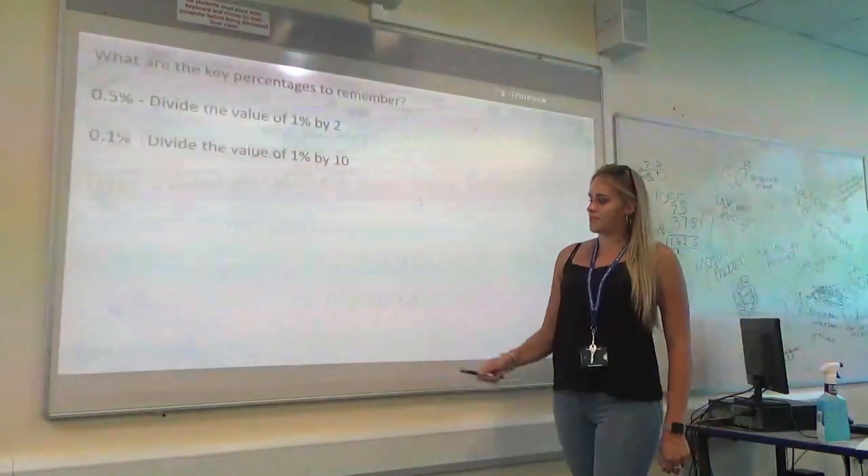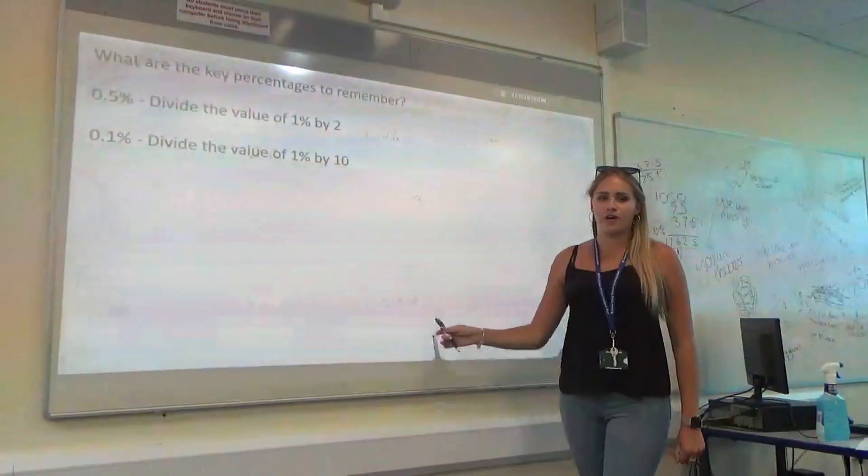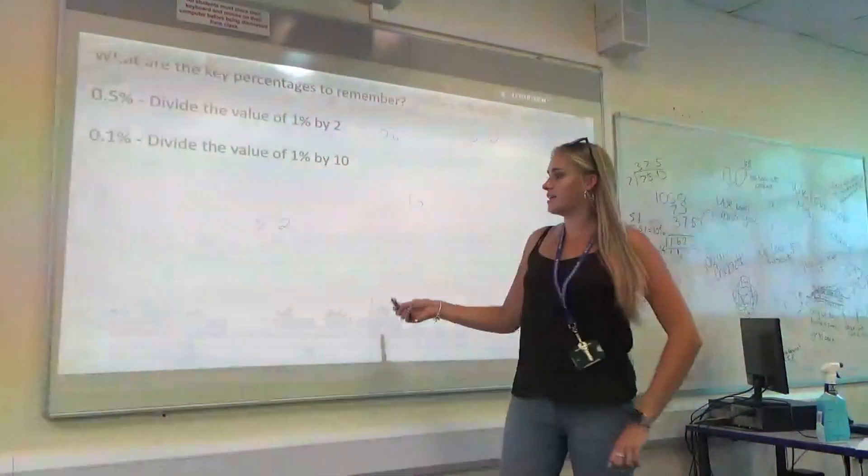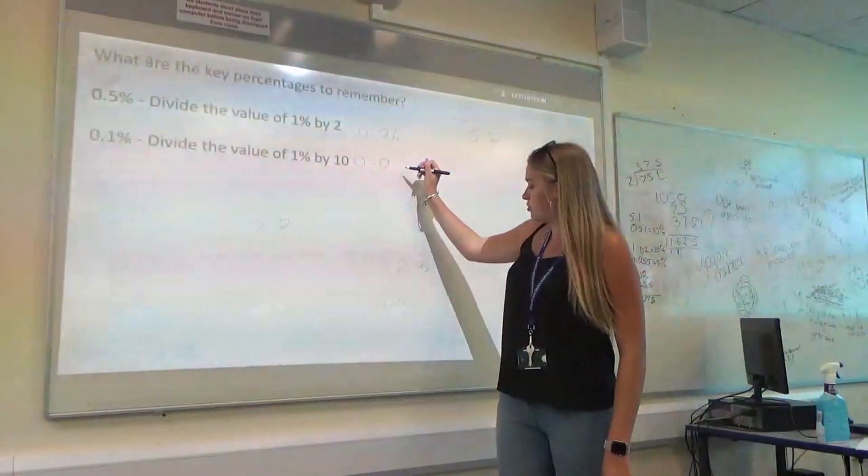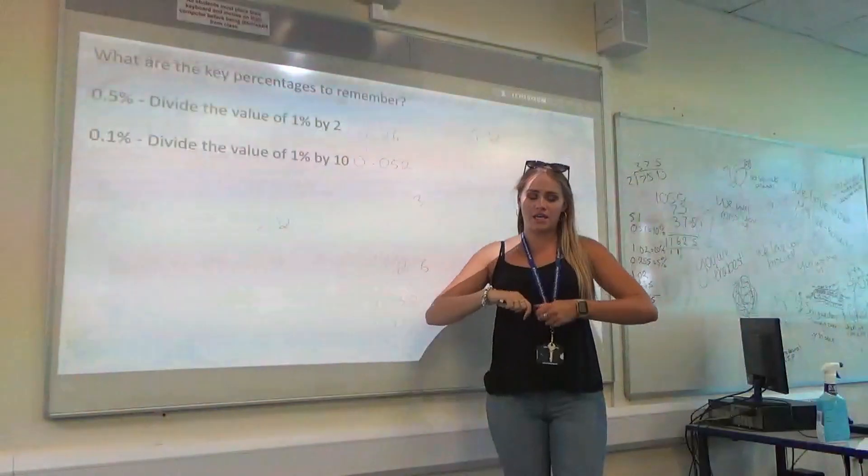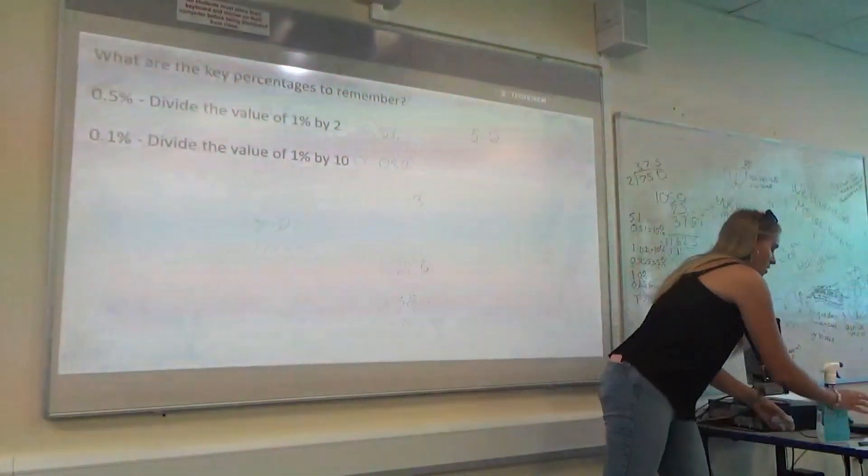Our 1% from before was 0.52. So, we're going to divide that by 10 again to get 0.1%. So, we'll get 0.052.